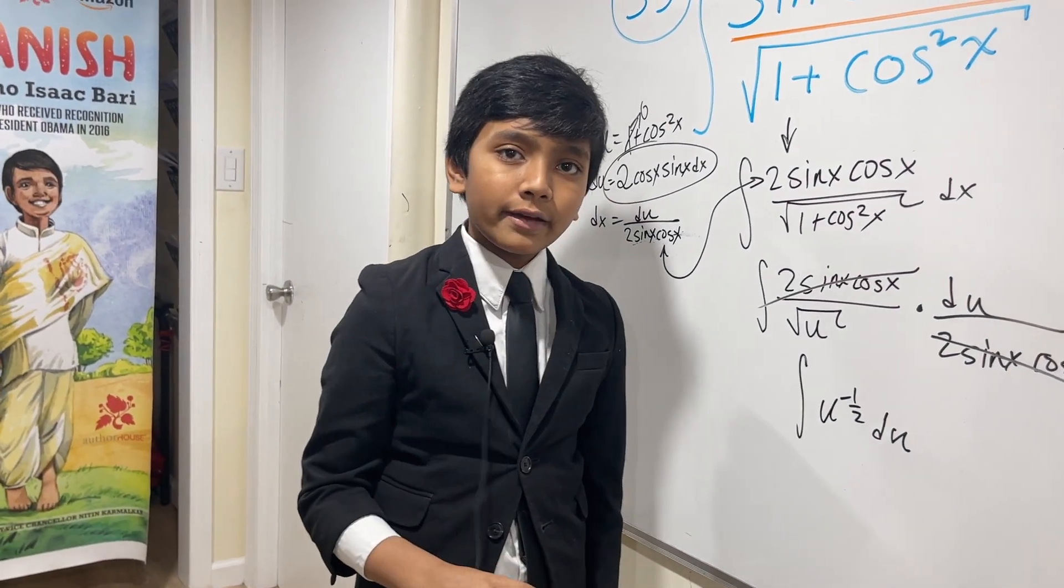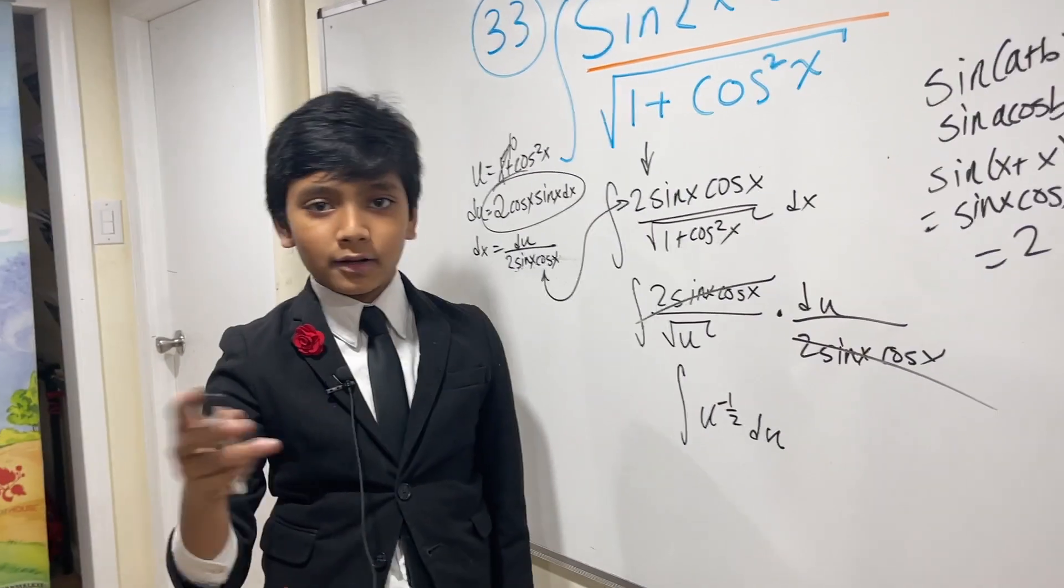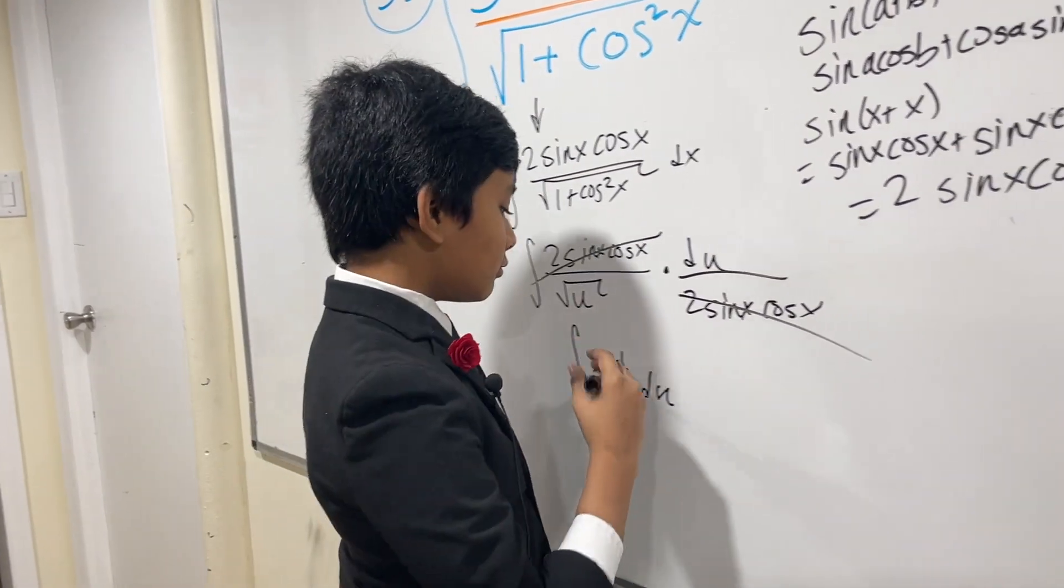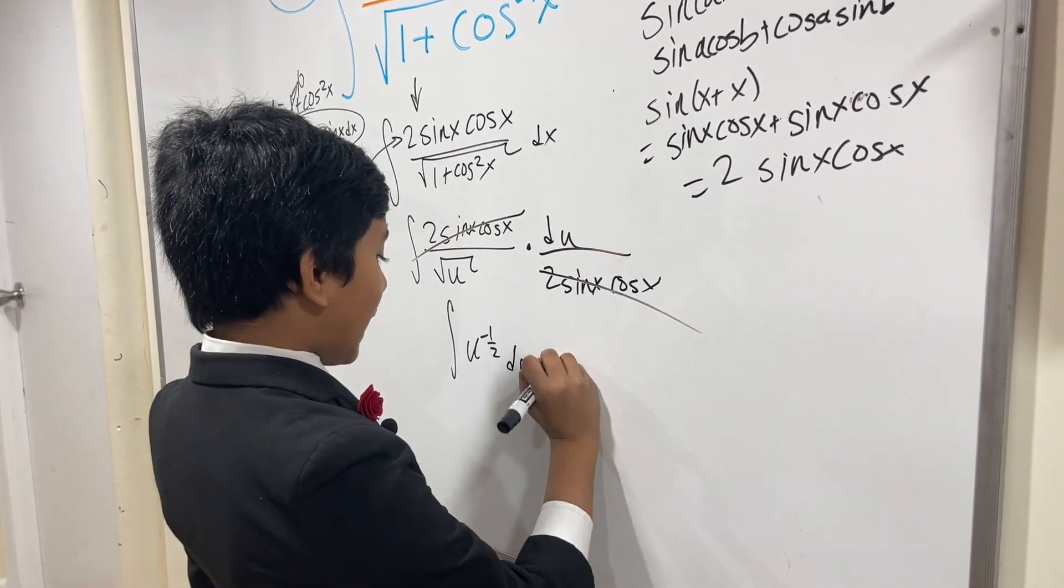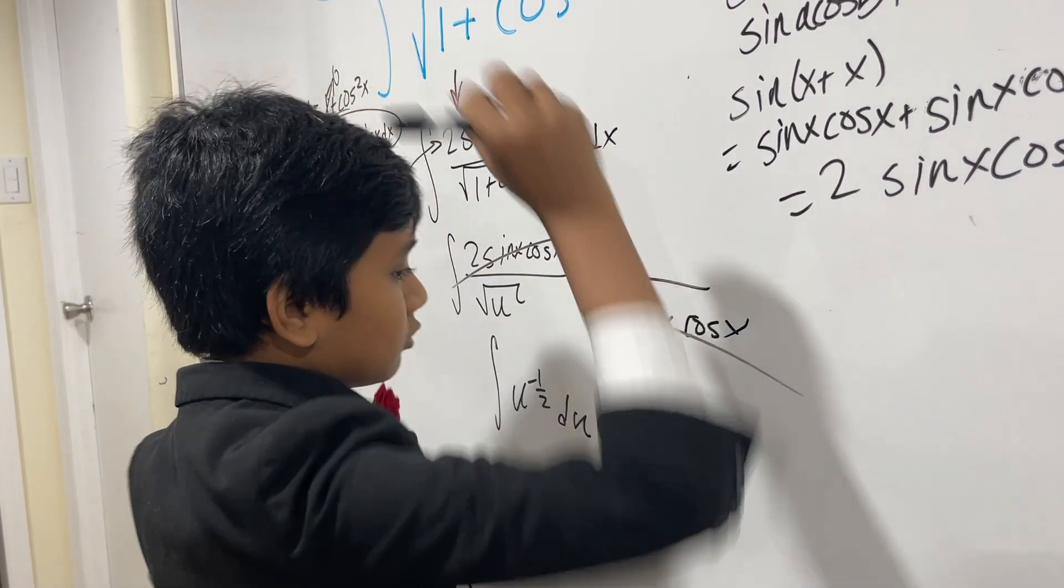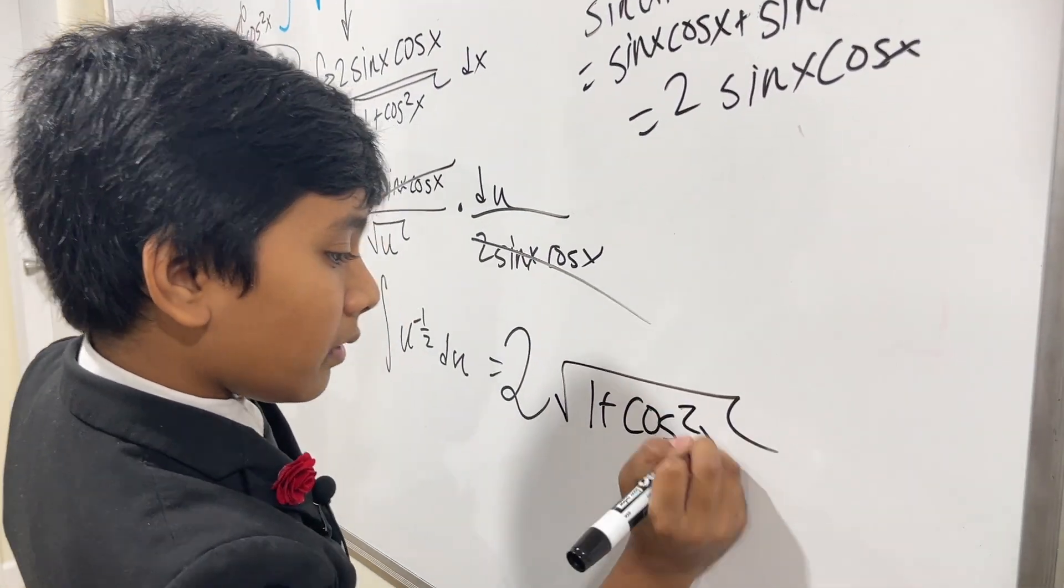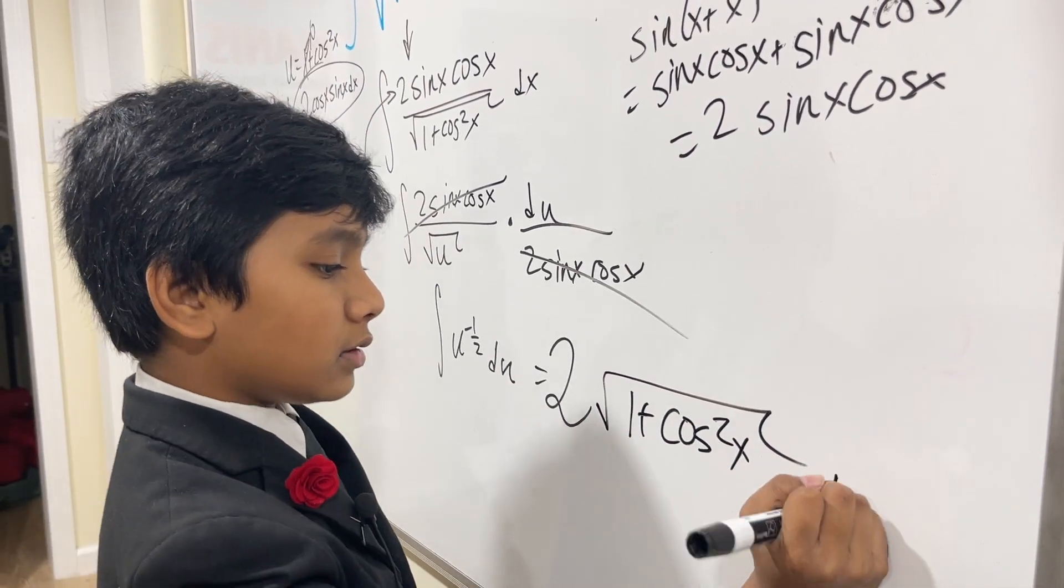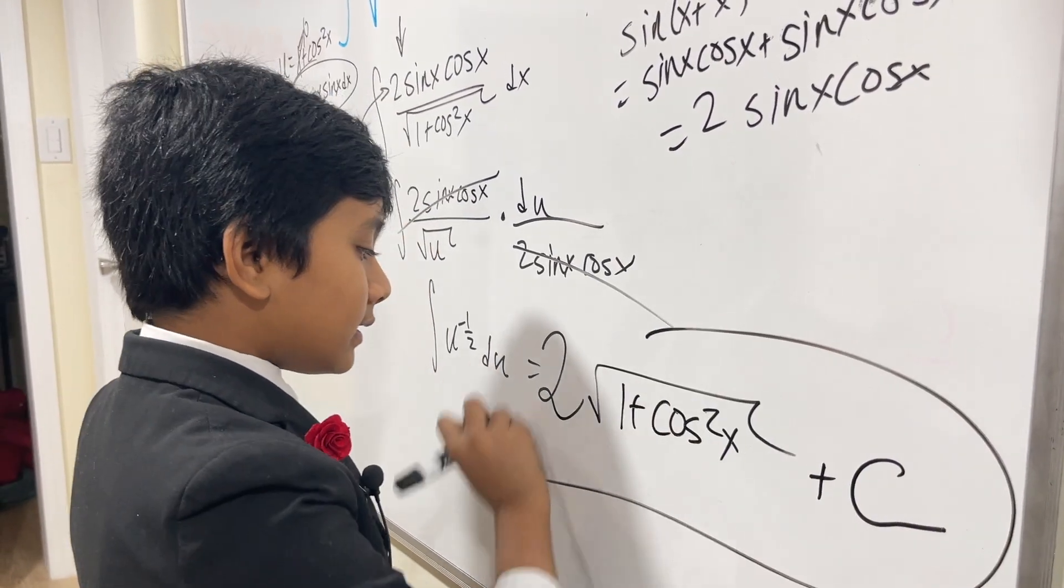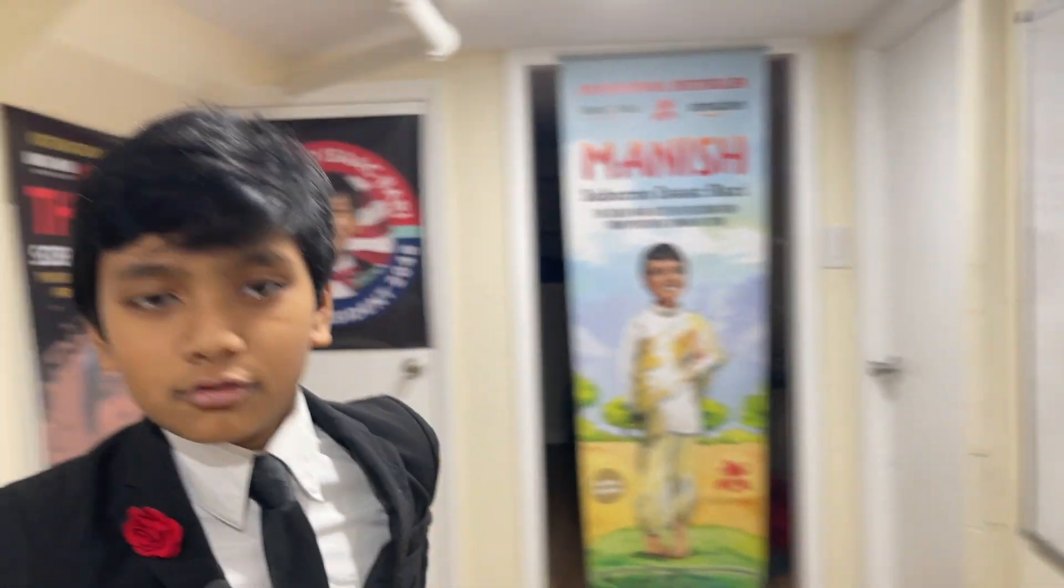Or u to the 1 half over 1 half if you want to be fancy about it. So sorry for all the blabbering, but this is just 2 root u. What's u? 1 plus cosine squared x plus c. That's it. Thank you everybody for watching, and we'll see you in the next one.